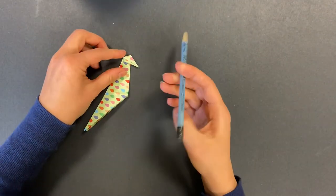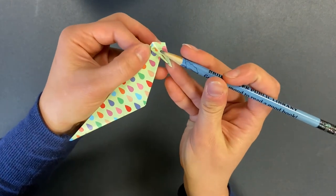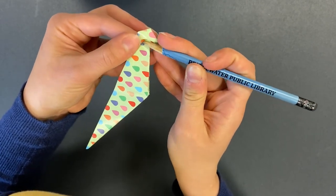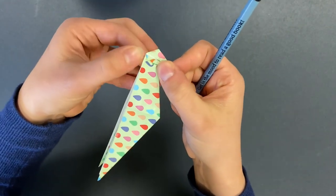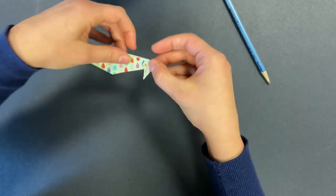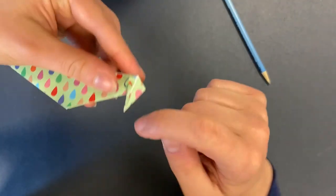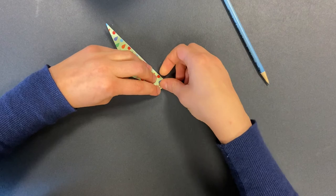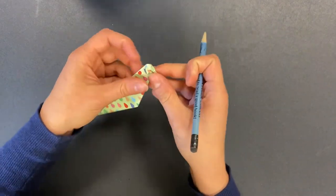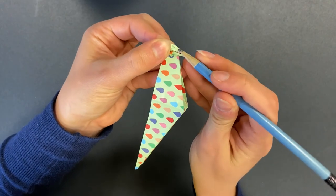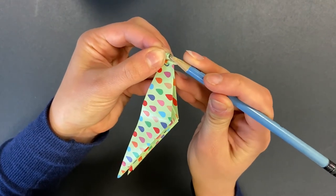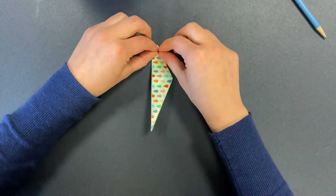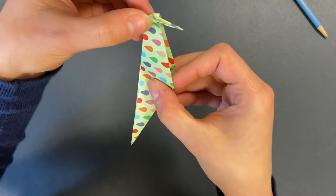Grab your pencil and use it to open up this little pocket here. It's okay if you get pencil on your paper and then compress it down. And then we're going to repeat that on the other side. So you're going to take this line and fold it to meet the center. Use your pencil tool to open up this little pocket here. Compress it down.